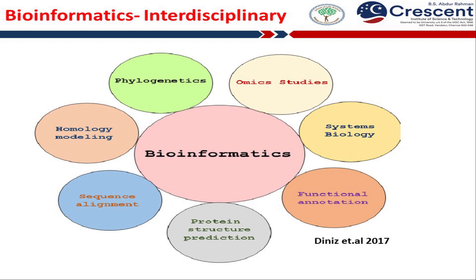Bioinformatics is an interdisciplinary science. It gathers data from omics, systems biology, annotation of genes from sequence to genome, protein structural information, alignment of sequences from various organisms, homology modeling, and phylogenetics. Omics studies include proteomics, genomics, transcriptomics, metabolomics, glycomics, etc. Systems biology is an approach by which a system of interacting units is analyzed as a whole rather than by analyzing its individual constituents.